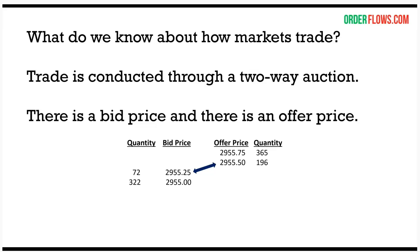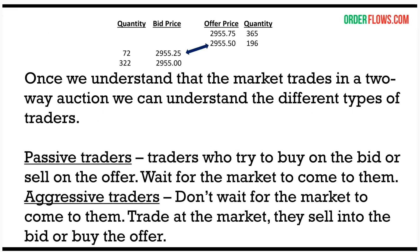What do we know about markets? Markets trade through a two-way auction — there's a bid price and there's an offer price. For example, in the E-mini S&Ps: 2955.25 bid versus 2955.50 offer, meaning somebody's willing to buy at 2955.25 and someone's willing to sell at 2955.50. No trade will occur unless somebody either lifts the offer or hits the bid.